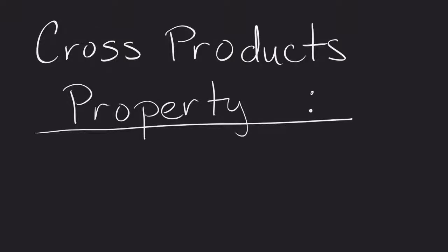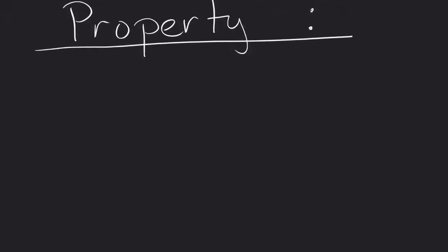Cross products property. Sometimes people call this the cross product multiplication or just cross multiplication. What this basically allows us to do is take a fraction and multiply its parts in order to simplify this.